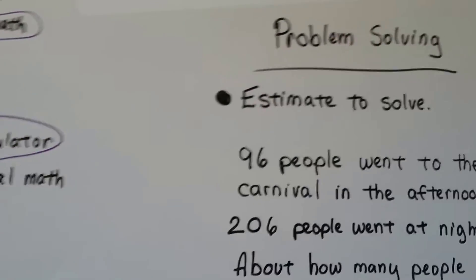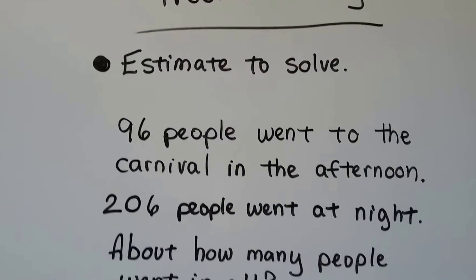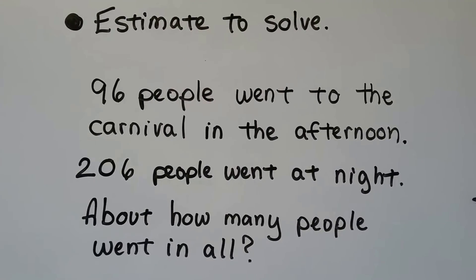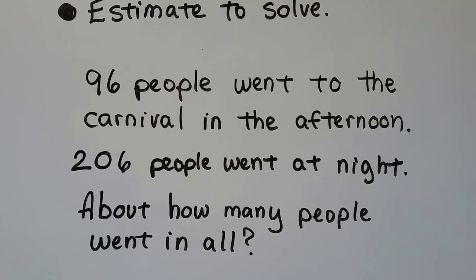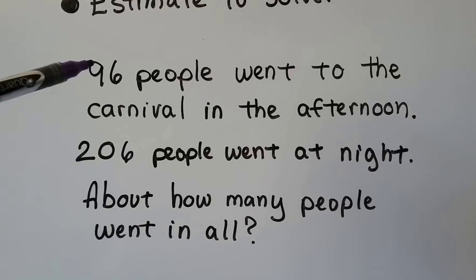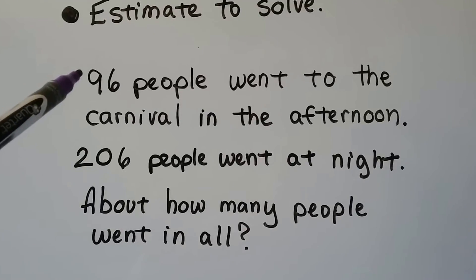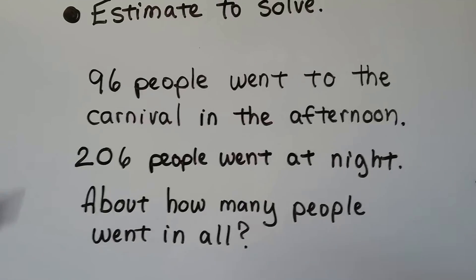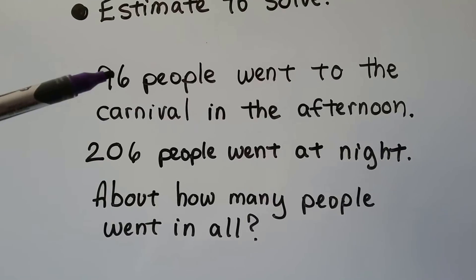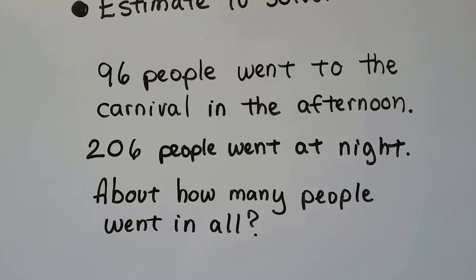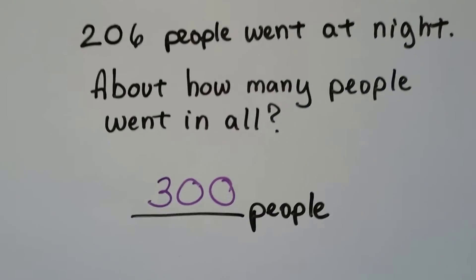Let's do some problem solving using estimation - an educated guess. 96 people went to the carnival in the afternoon and 206 went at night, so about how many people went in all? 96 is really close to 100, and 206 is very close to 200. So if we add 100 plus 200, that's about 300 people - that's our estimate.